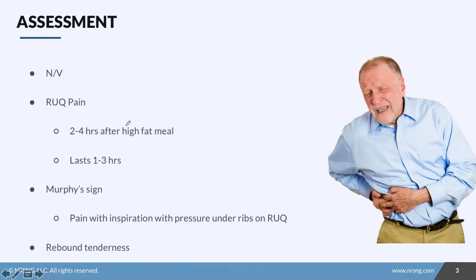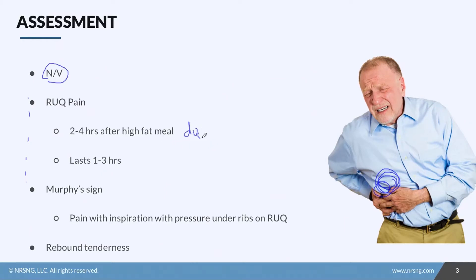Patients are going to come in reporting nausea and vomiting. We need to dig in a little deeper when patients report those symptoms. They'll have severe right upper quadrant pain that tends to be worse about two to four hours after they eat a high fat meal — that's when the food is making its way into the duodenum.